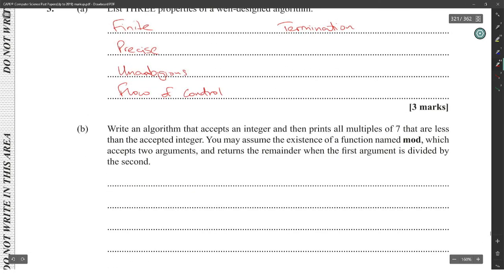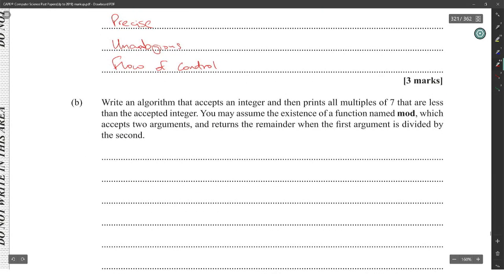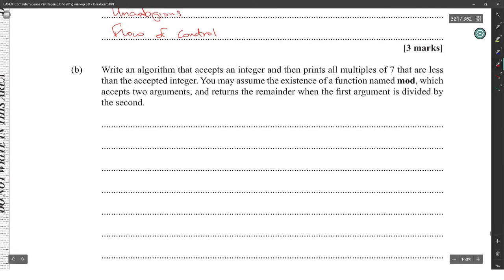Write an algorithm that accepts an integer and then prints all multiples of seven that are less than the accepted integer. You may assume there is a mod function that takes two arguments and returns the remainder when the first argument is divided by the second.